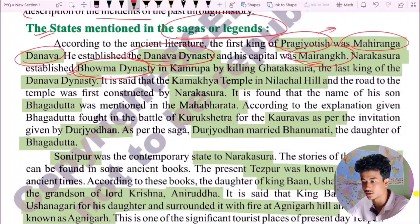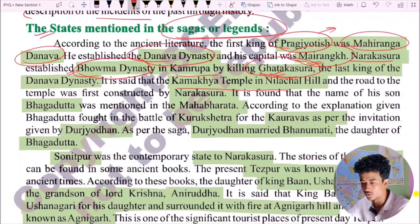The empire of Kamarupa was established by killing Ghatakasura. Ghatakasura was the last ruler of the Danava dynasty. After Ghatakasura, the Naraka dynasty was established. It is said that the Kamakhya temple on Nilachal hill and the road to the temple were constructed by Narakasura.